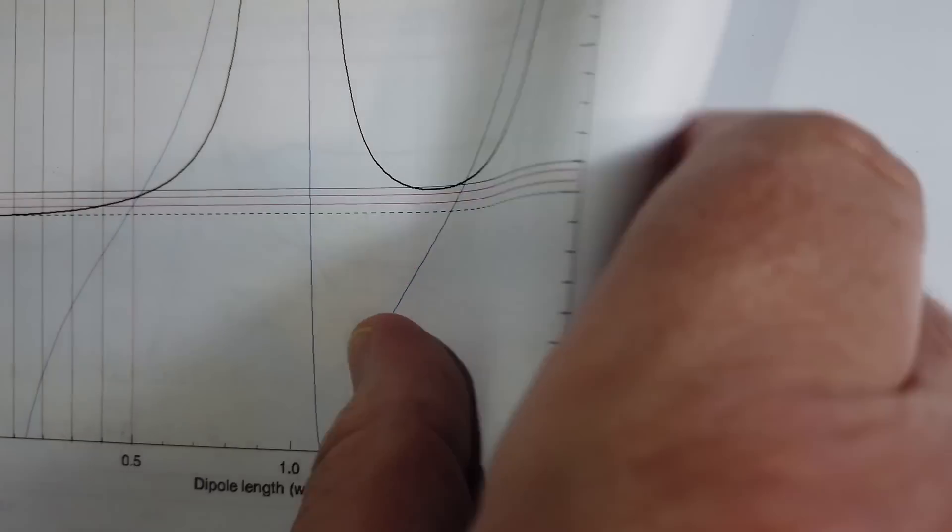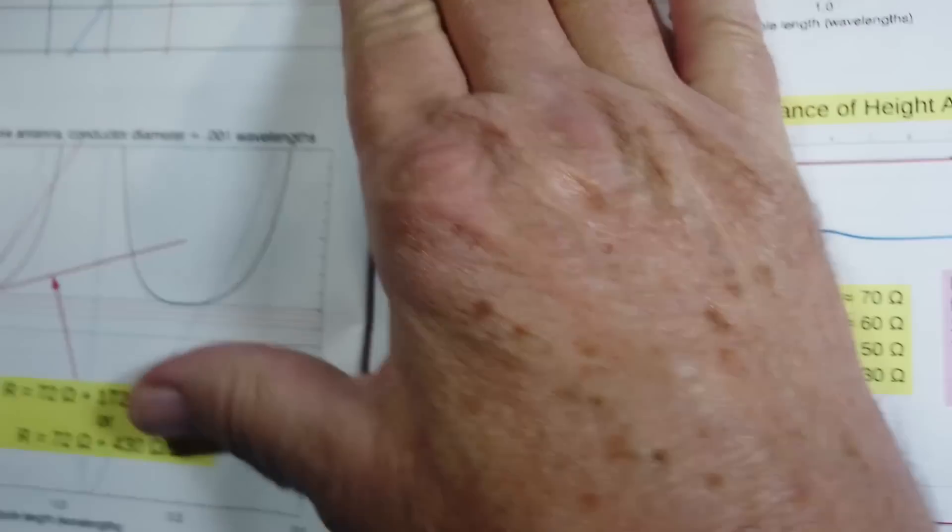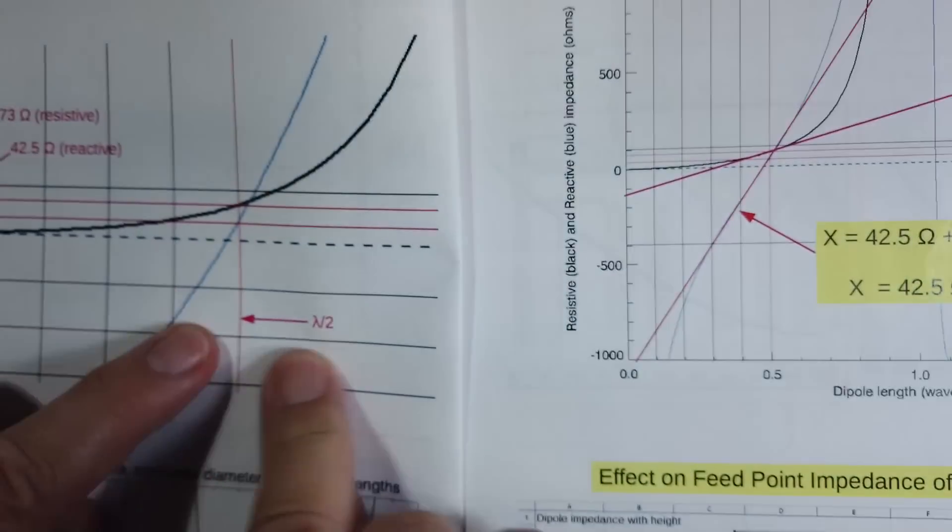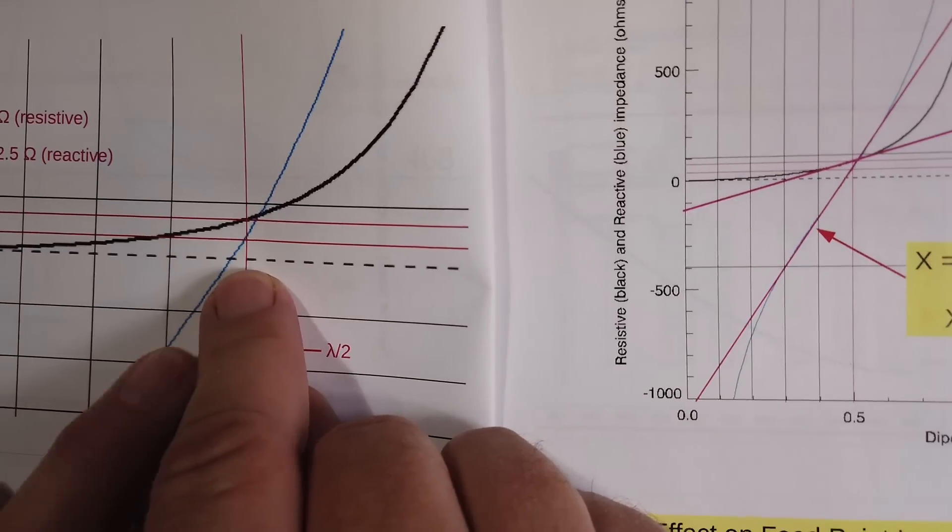And if we go into that a little bit more carefully, and we look at an antenna that is a half wavelength, exactly a half wavelength.